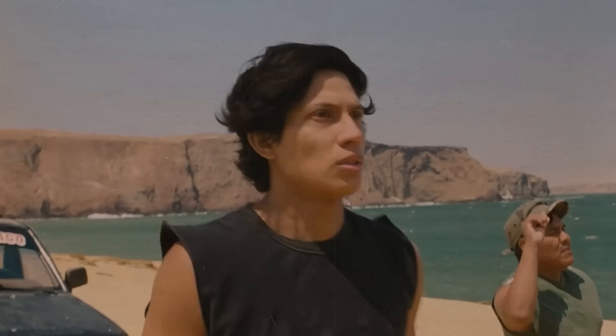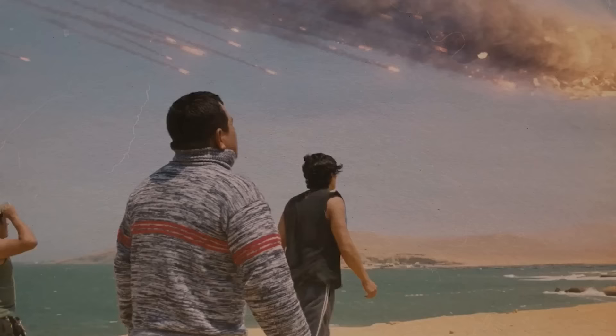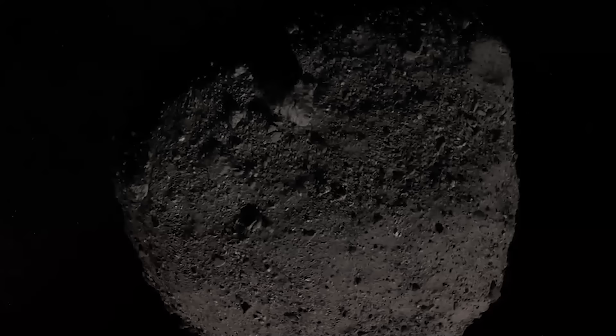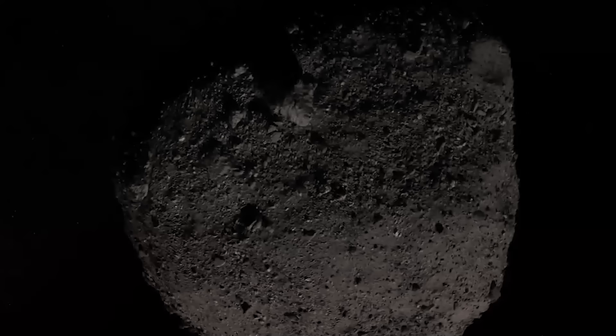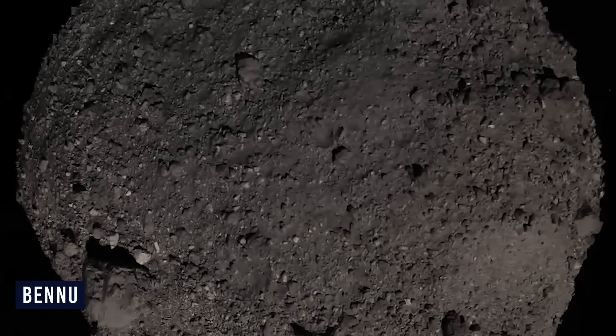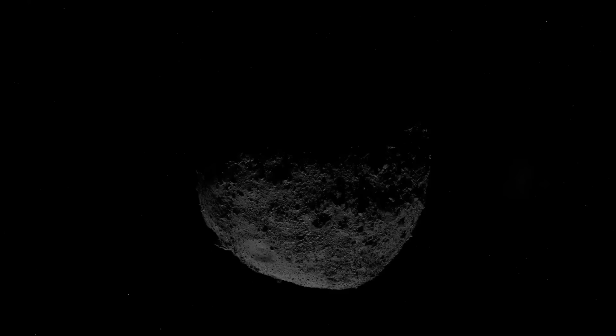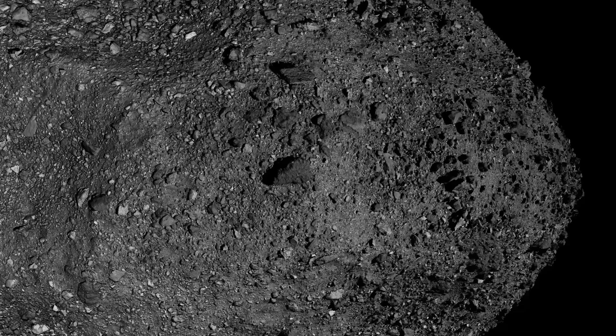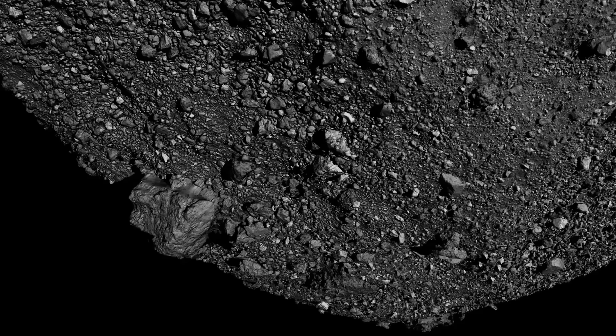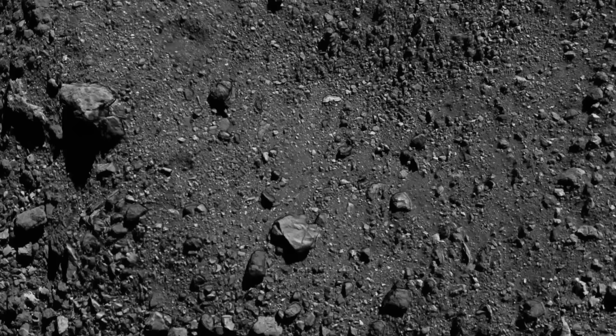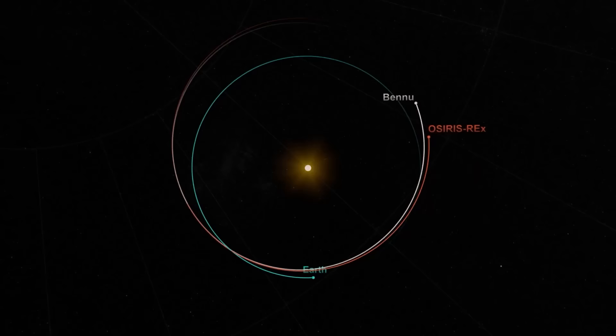One of these many asteroids is Bennu. Originally known as 1999 RQ36, this asteroid was renamed Bennu by 9-year-old Mike Puzio in a 2013 contest. It was named after the Egyptian god Bennu, often depicted as a gray heron. Puzio chose the name because he thought Tag Sam and the solar panels resembled the bird god's neck and wings.